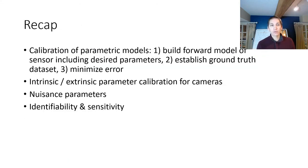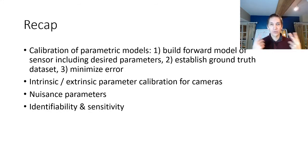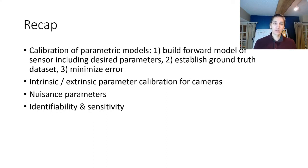In summary, calibration is a process of building a forward parametric model of our sensor, establishing ground truth and an acquisition procedure to produce an observation dataset, and then minimizing error over that dataset. We talked about intrinsic and extrinsic parameter calibration for cameras, and we discussed the issues of nuisance parameters, identifiability, and sensitivity. That's it for now — I'll see you next time.